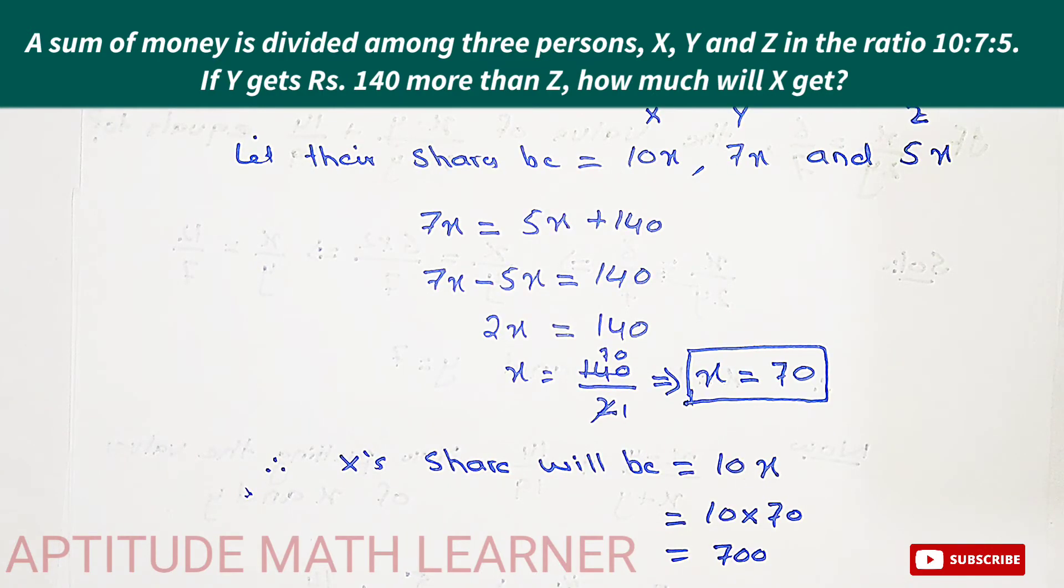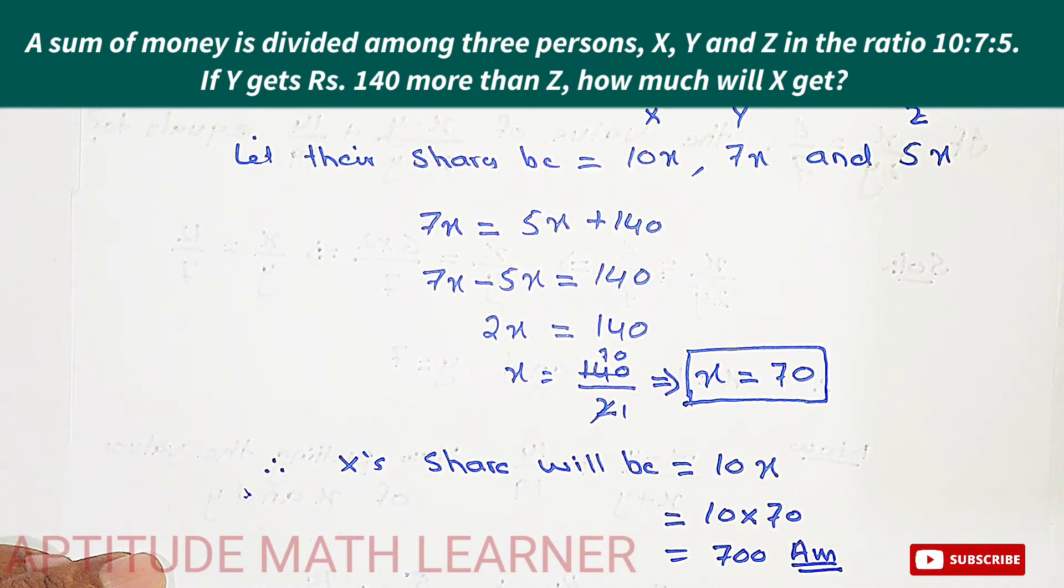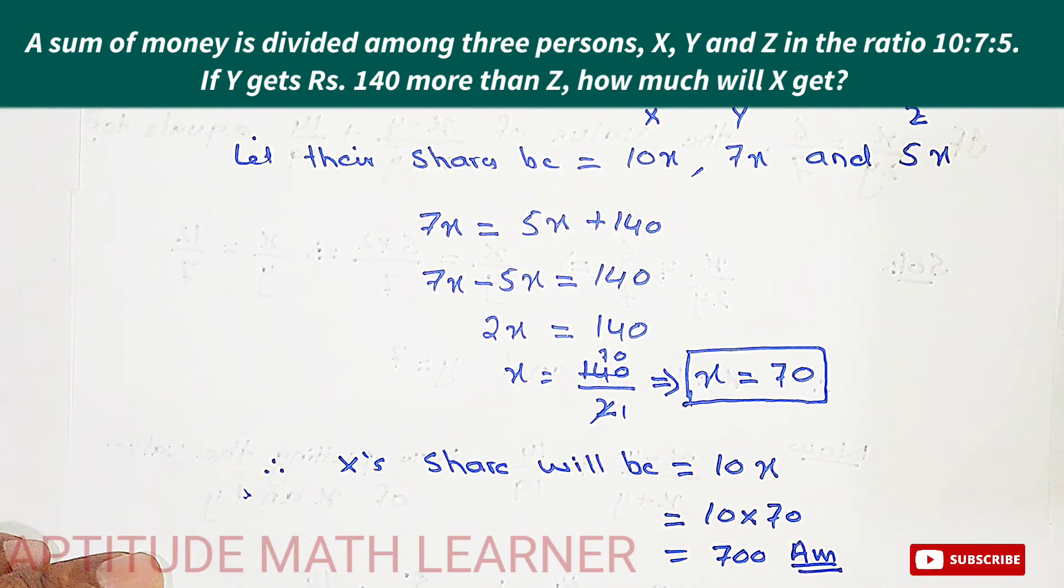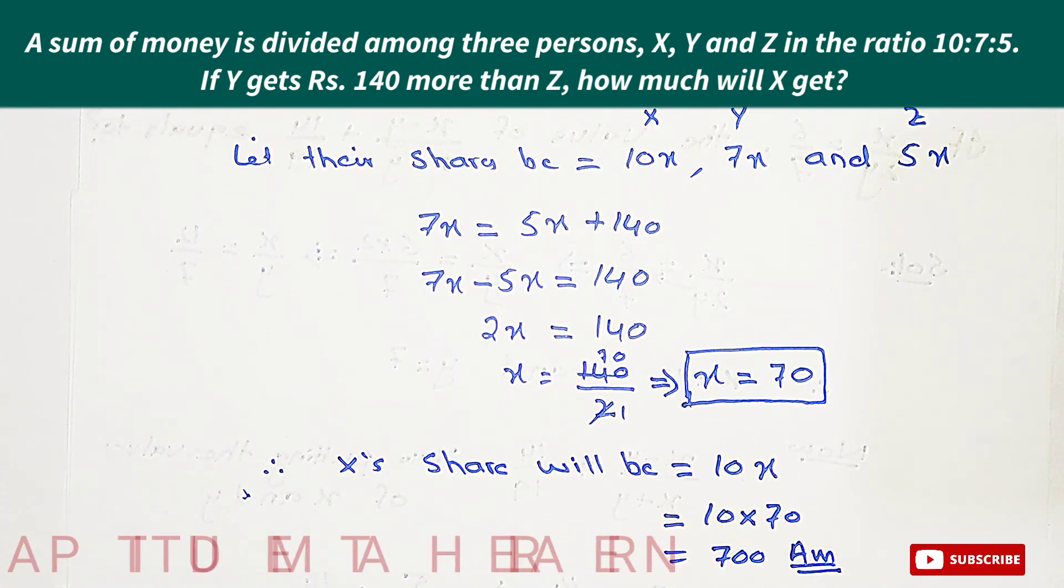700. So 700 is the share for X, and this is our answer. I hope you have completely understood the question and the solving method. Thank you very much.